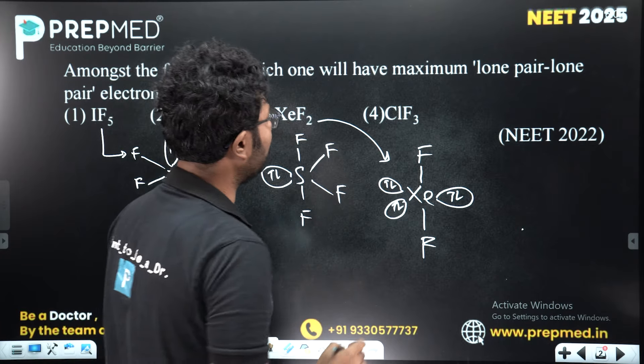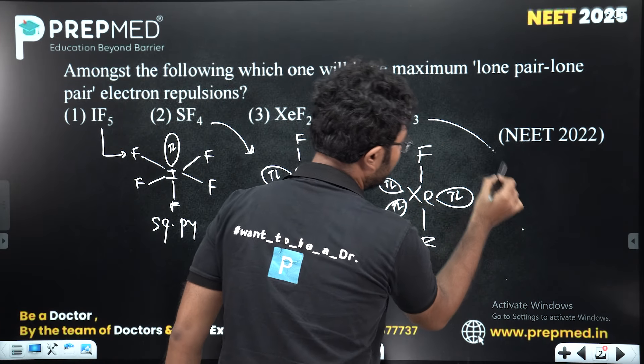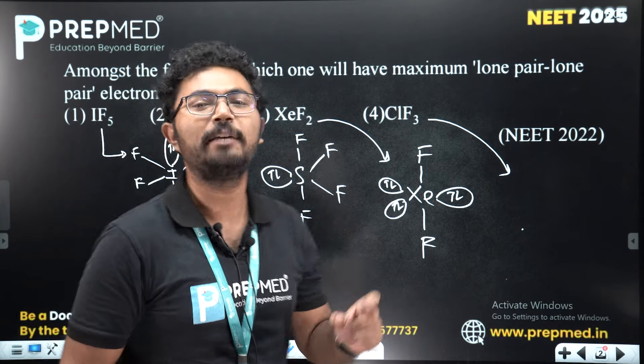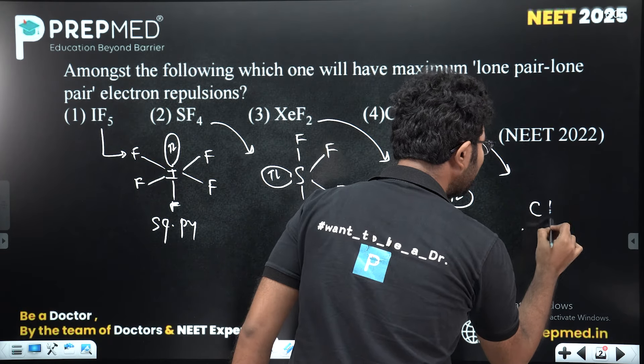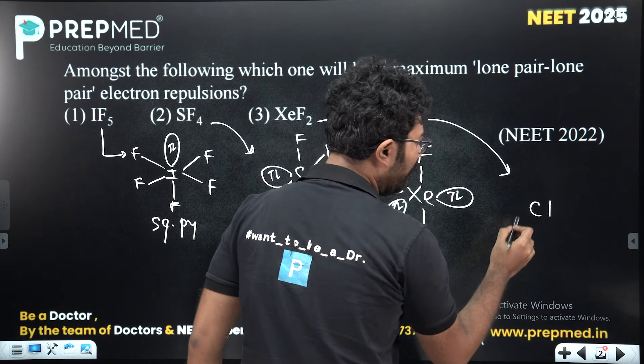XeF2 has three lone pairs. ClF3 is a T-shaped molecule. ClF3 structure has two lone pairs.